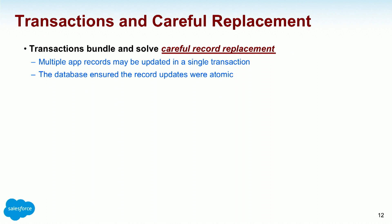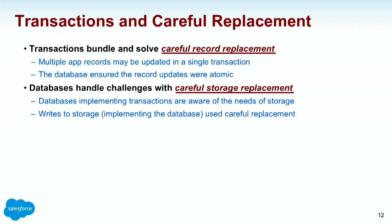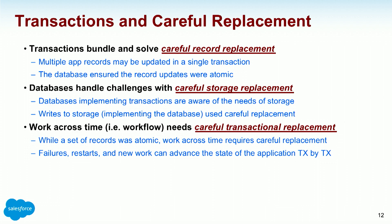Transactions bundled and made this awesomely easier for decades. They solved careful record replacement — wrap a bunch of records together, begin transaction, change 20 records, end transaction. I never got 19 or 1; I always got zero or 20. That was huge. Transactions also solved careful storage replacement — the database and transaction system handled writing to the physical disk. Working across time though: I want to do some stuff, wait for something, then do something else — that was multiple transactions. I had to think about how to record state while waiting for the event that moves me to the next state.